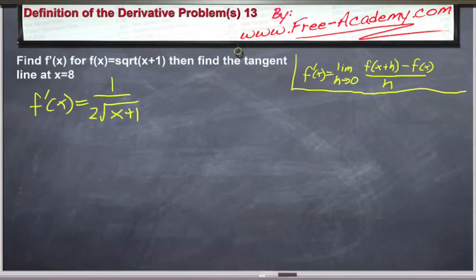Now we still want to find the tangent line at x equals 8. So we'll do this by finding the slope first, which is just a matter of plugging 8 into the derivative formula. This is 1 over 2 times the square root of (8+1), and that's equal to 1 over 6. Square root of 9 is 3, times 2 is 6. So this is equal to our slope.